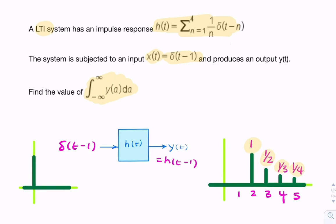My delayed impulse starts at t equals 1. Now the question—this is the third element—is asking for the area under the output. So it's the area under this.